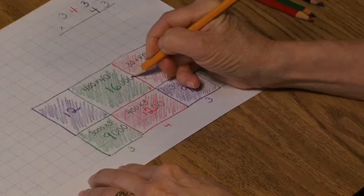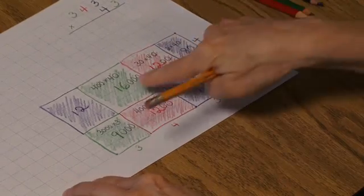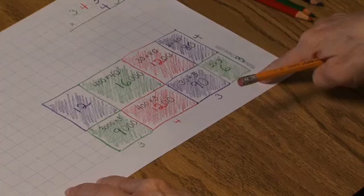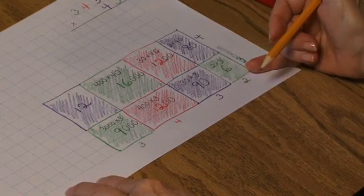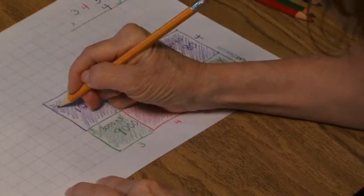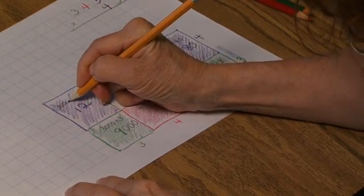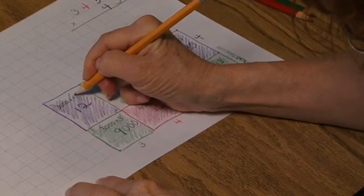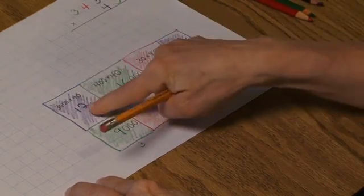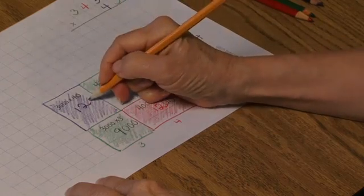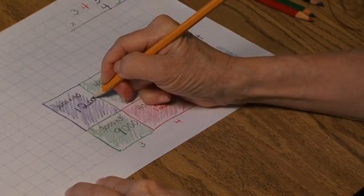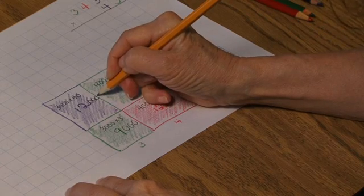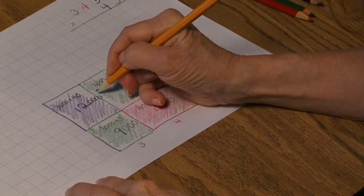3 thousands taken 40 times equals 12 ten-thousands, which I'm going to have to squeeze in.